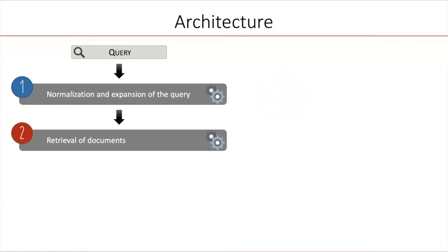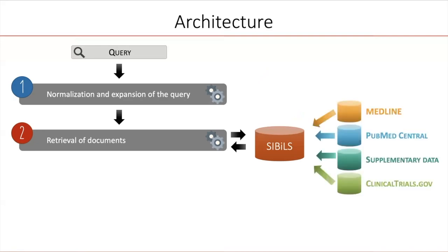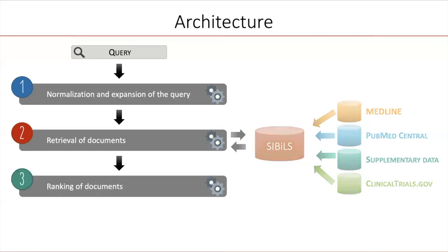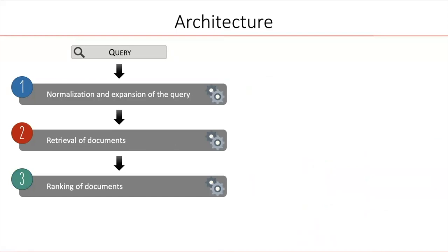Then, the processed query is used to retrieve documents in Sibils. Sibils is a backend search engine developed by the SIB text mining group. Among the articles present in Sibils, there are four collections of interest for variant search: Medline with about 33 million abstracts, PubMed Central with about 4 million full-text articles, supplementary material with about 800,000 articles corresponding to about 4 million files — mainly images and tables — and finally about 300,000 clinical trials from clinicaltrials.gov. All these documents are processed and annotated with a list of terminologies such as DrugBank, MeSH, and UniProt. The retrieved documents are then ranked to return the most relevant articles first.